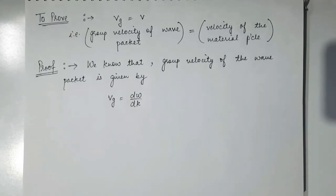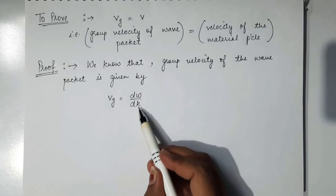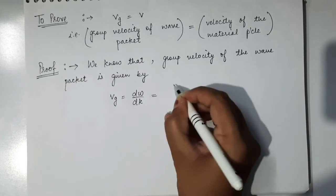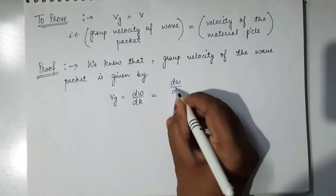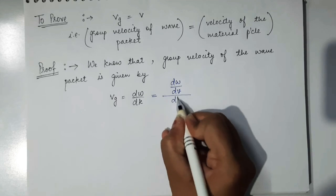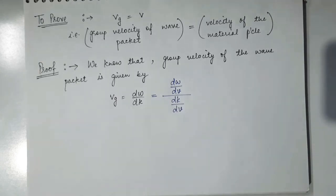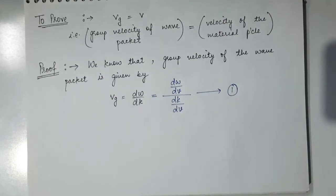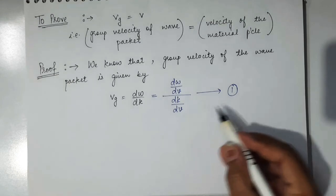Now we will prove that the velocity of this wave packet — the group velocity — is equal to the velocity of the material particle. The group velocity is given by Vg = d omega / dk. To prove it equals v, we rearrange by multiplying and dividing by dv (dividing numerator and denominator both by dv), giving Vg = (d omega/dv) / (dk/dv). Call this equation 1. We will now calculate d omega/dv and dk/dv and substitute into equation 1.